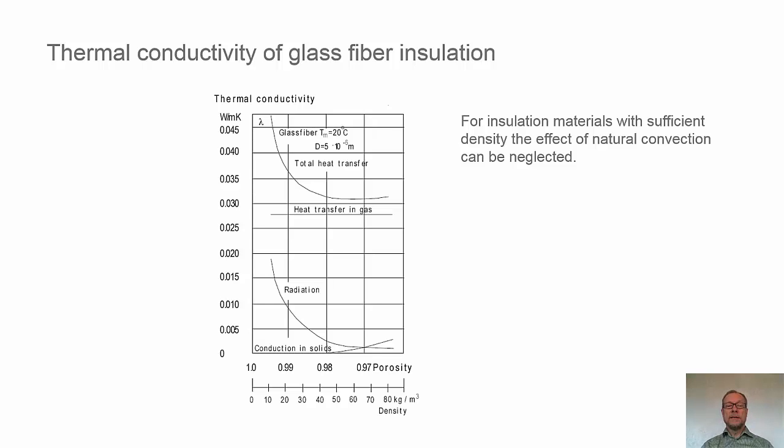Here we have some numbers for thermal conductivity of glass fiber insulation. We have, on the vertical axis, the thermal conductivity of different heat transfer mechanisms and the apparent thermal conductivity for these parts. On the horizontal axis, we have the porosity or the density.